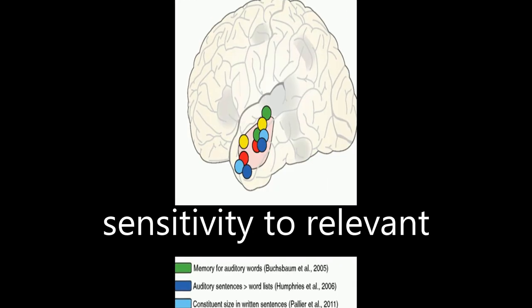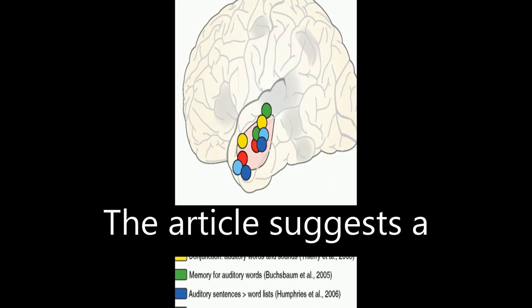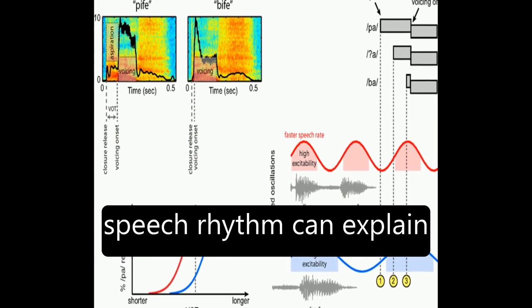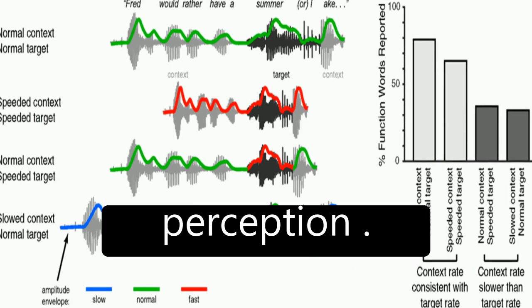This helps increase sensitivity to relevant acoustic cues. The article suggests a framework through which neural entrainment to speech rhythm can explain effects of speech rate on word and segment perception.